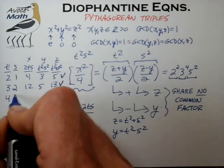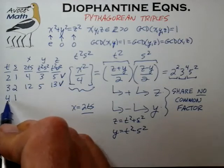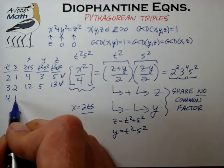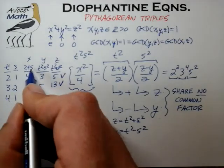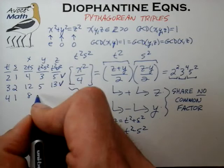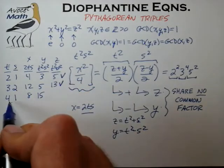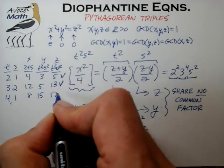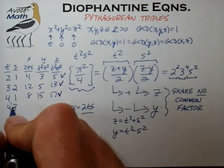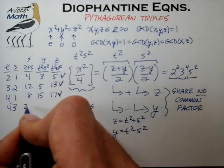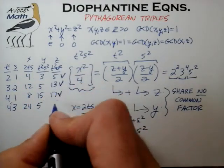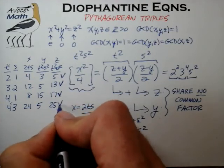For t = 4, s = 1: they're relatively prime and of opposite parity. x = 2×4×1 = 8, y = 16−1 = 15, z = 16+1 = 17. That's a Pythagorean triple. For t = 4, s = 3: x = 24, y = 16−9 = 7, z = 16+9 = 25. That too is a Pythagorean triple.